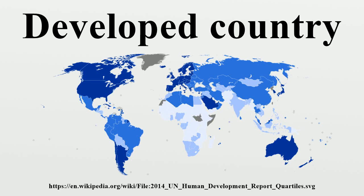Most commonly, the criteria for evaluating the degree of economic development are gross domestic product, gross national product, the per capita income, level of industrialization, amount of widespread infrastructure and general standard of living. Which criteria are to be used and which countries can be classified as being developed are subjects of debate.